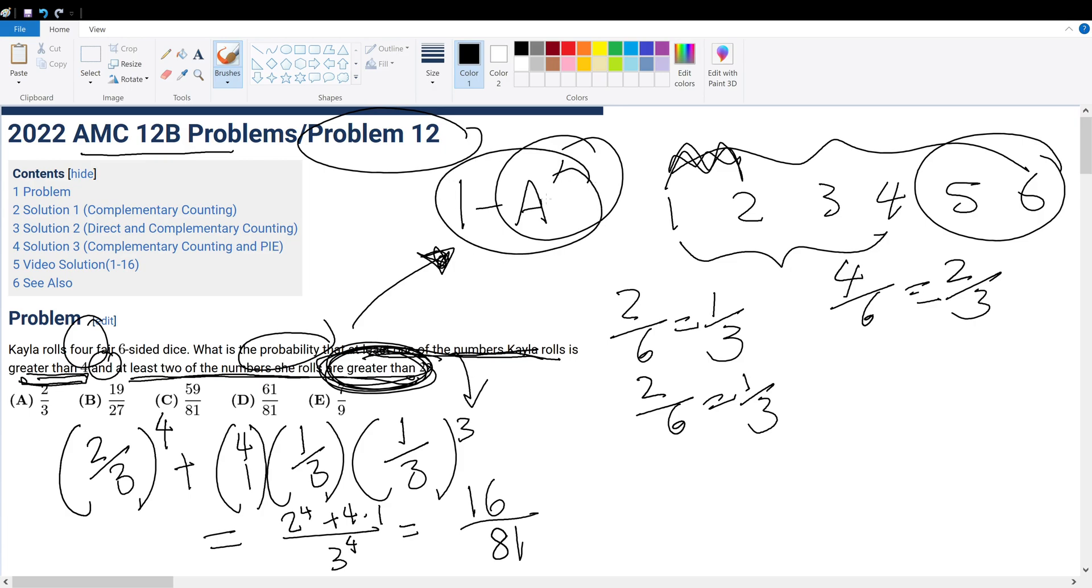Now, since this is complementary counting, we do 81 minus 16 over 81.